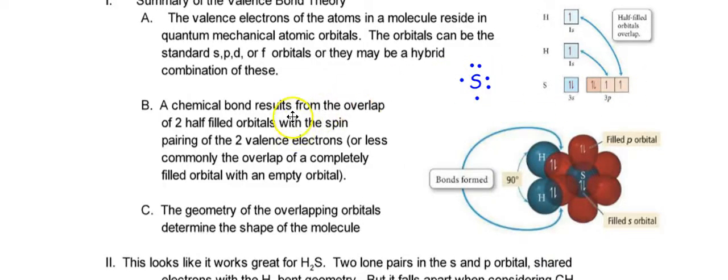All right, so where does bonding occur? A chemical bond results from the overlap of two half-filled orbitals with a spin pairing of two valence electrons. So that's what this will be, and here's a hydrogen. So here's the hydrogen that will come up, and we'll have that spin pairing. So one of these hydrogens that's half-filled will bond with the sulfur that's half-filled. Good, so let's grab another hydrogen with a half-filled, and put it right here. Oh, my goodness, that looks honky-dory, isn't it? All right, so it looks like things are doing fantastic.